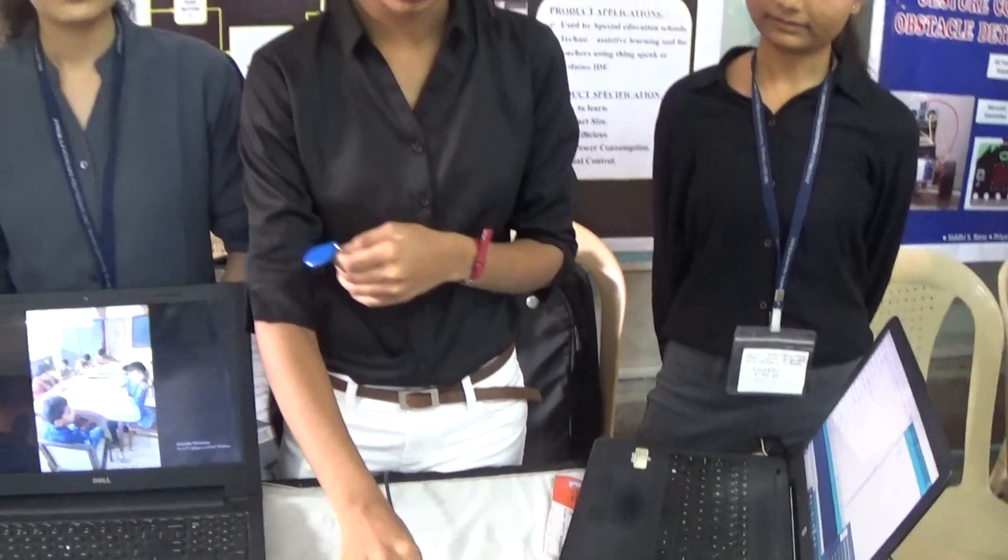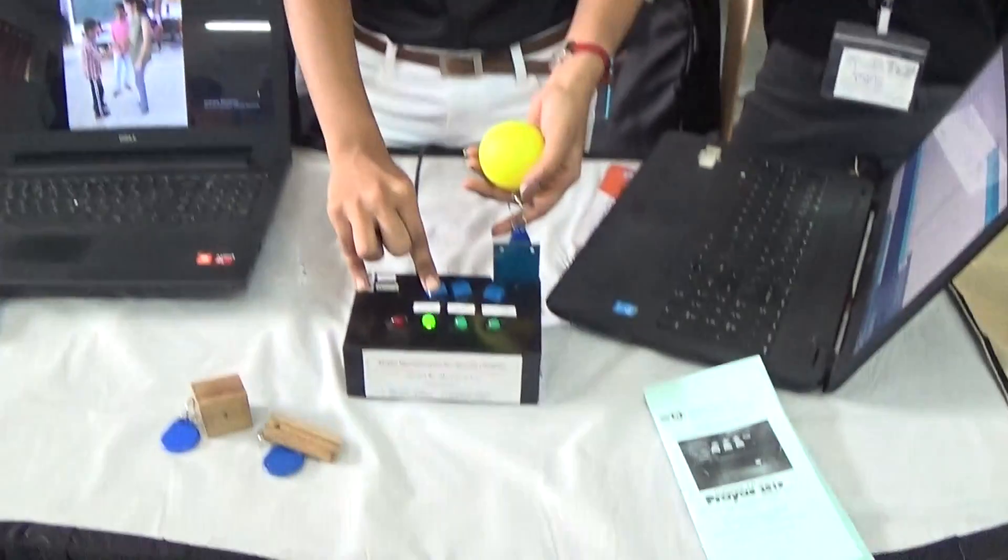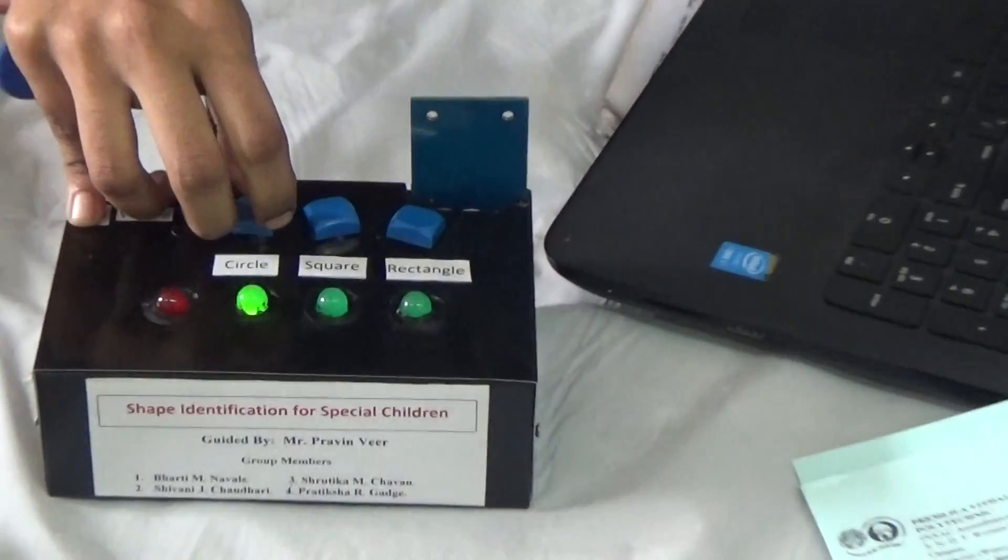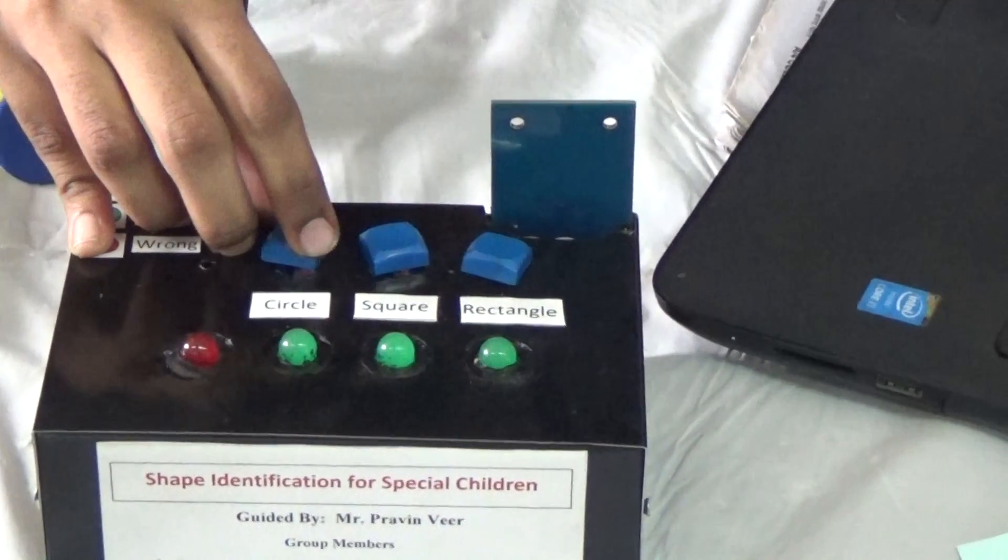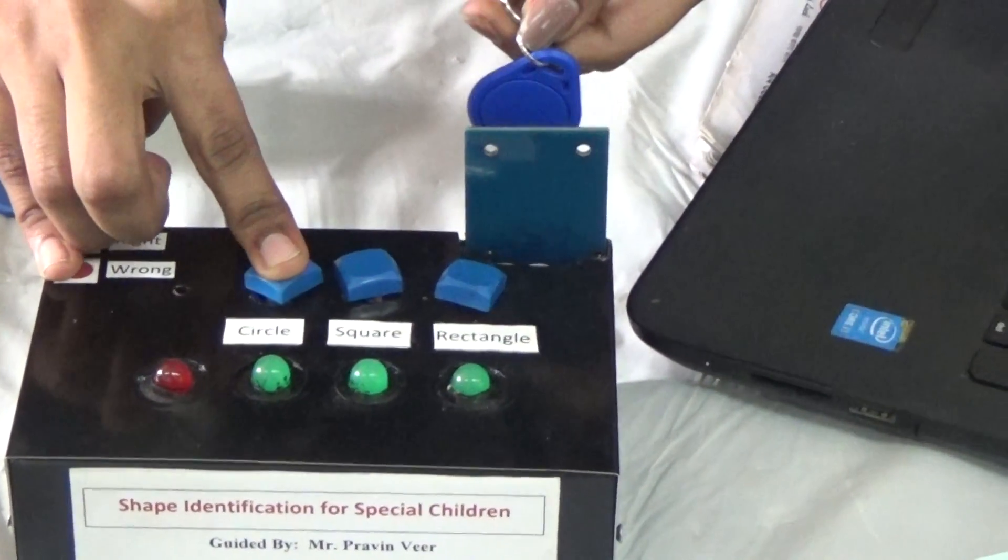For this, the child has to place the shape and display it. If the answer is right, the light will glow. If the answer is wrong - if we place the square for the circle - the light will glow with the buzzer.